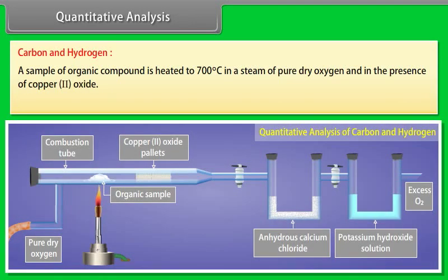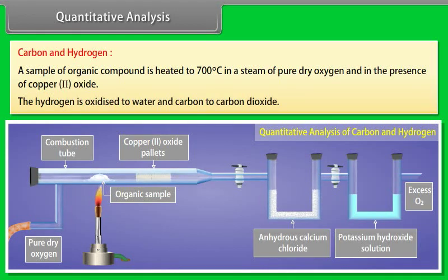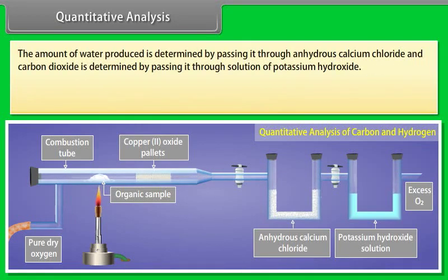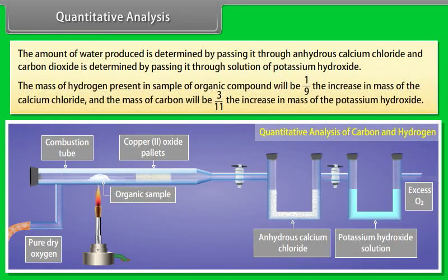Quantitative analysis — Carbon and hydrogen: A sample of the organic compound is heated to 700°C in a stream of pure dry oxygen in the presence of copper(II) oxide. Hydrogen is oxidized to water and carbon to carbon dioxide. The amount of water produced is determined by passing it through anhydrous calcium chloride, and carbon dioxide is determined by passing it through potassium hydroxide solution. The mass of hydrogen = 1/9 × increase in mass of calcium chloride; the mass of carbon = 3/11 × increase in mass of potassium hydroxide.